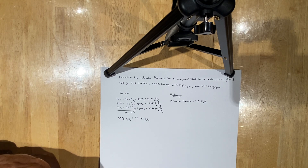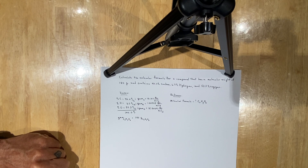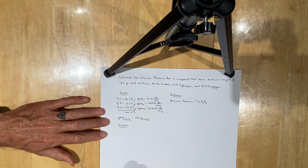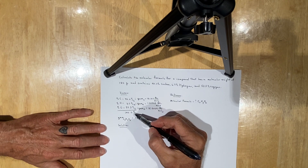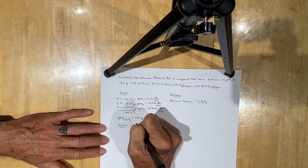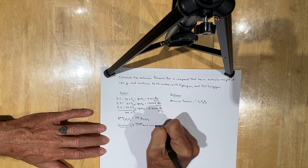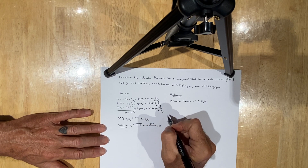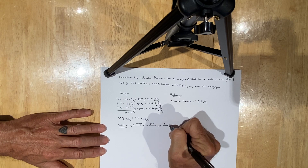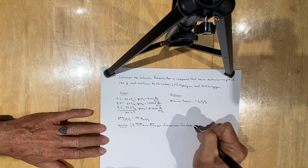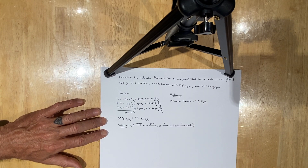In many ways, you're going to incorporate the knowledge that you use to calculate the empirical formula of a compound. The solution pathway is basically this: since you have 100% of this compound, you can assume that percent is mass. You then convert mass to moles using gram atomic mass, divide by the smallest number of moles, and multiply until whole to find the empirical formula — the simplest ratio of atoms to one another in the compound.